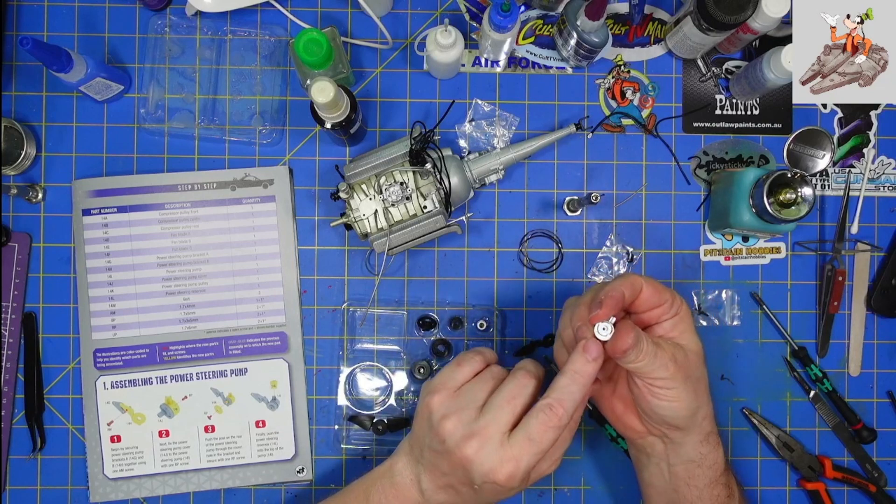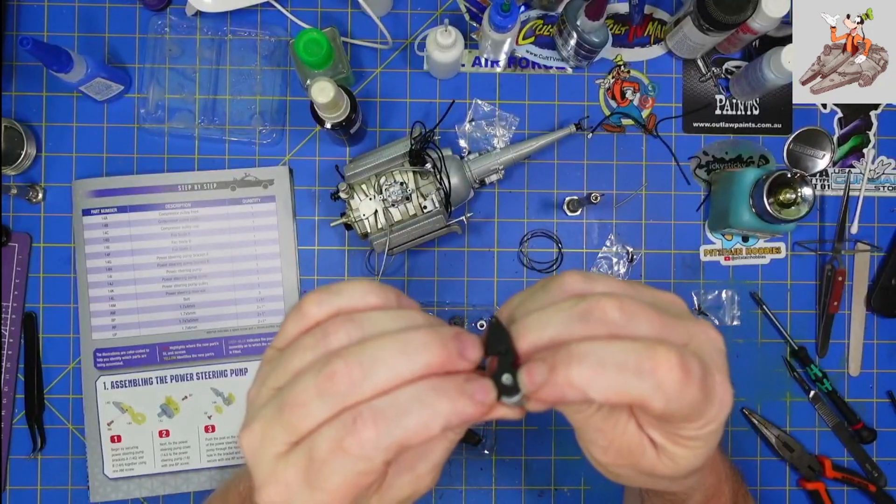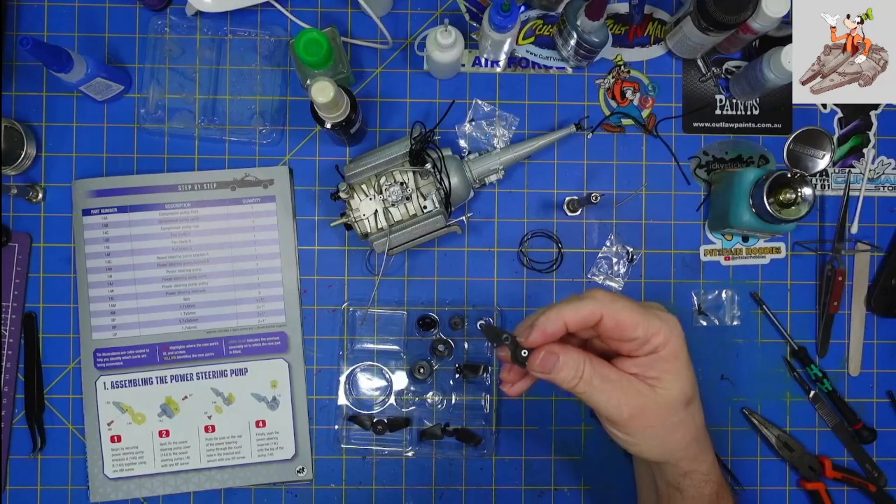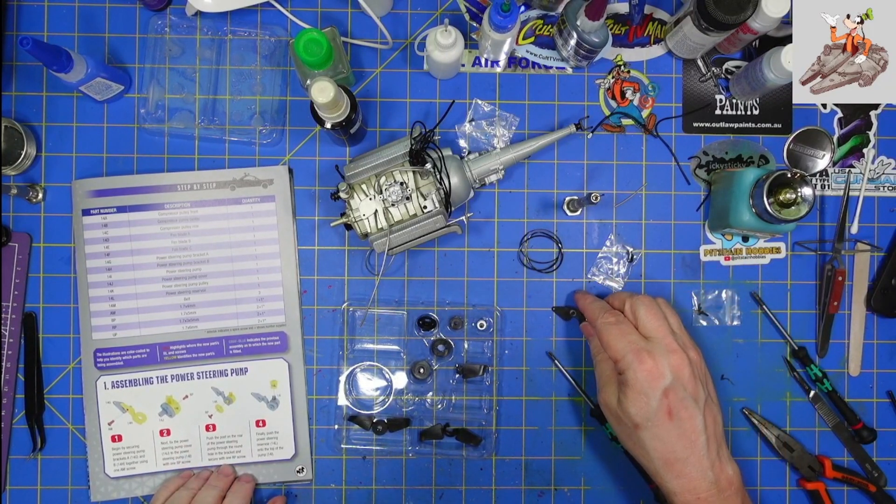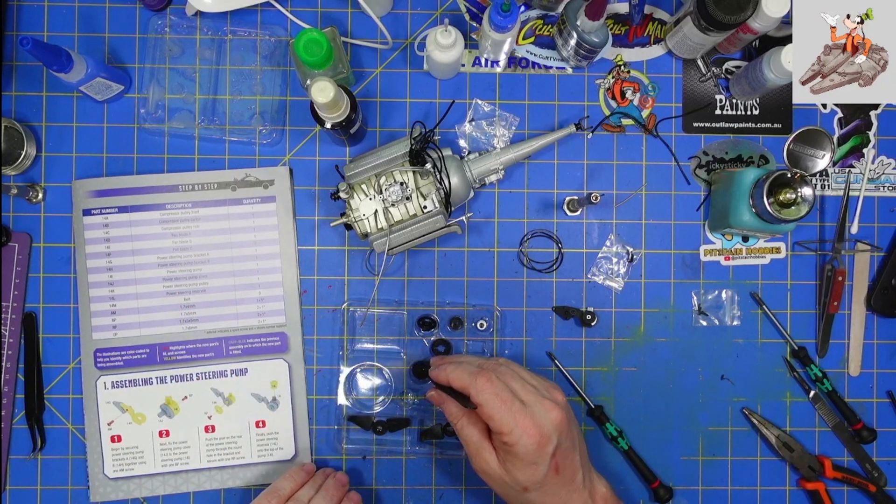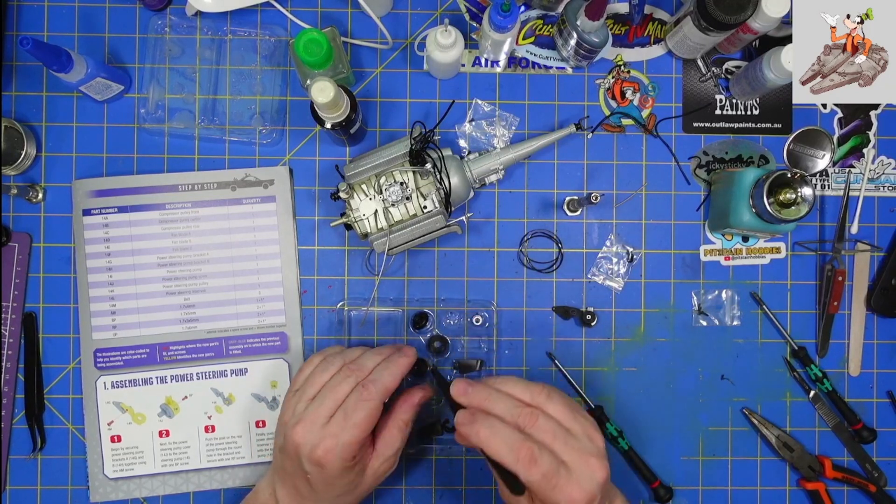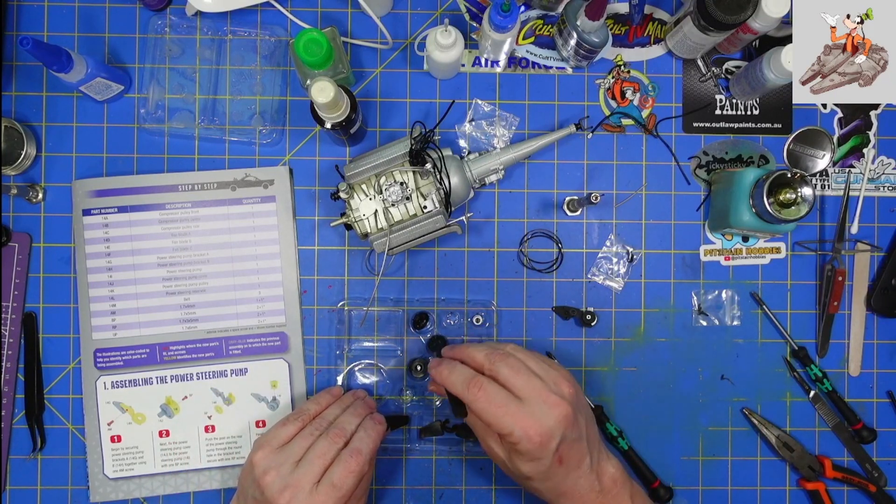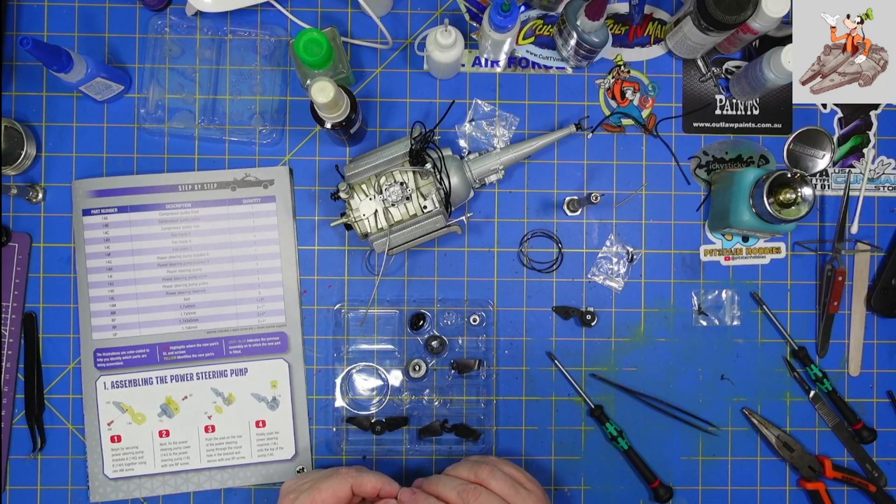And then we're going to take this post here. We're going to put the post through the bracket, or the arm, like that. We're going to take 14K, which is power steering pump pulley. So we need to find one that looks like a pulley. Just looking. I don't find one that looks specifically like a pulley.